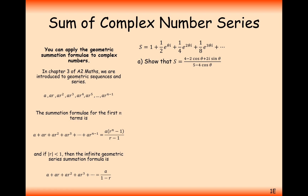The question is S equals 1 plus one-half e^(iθ) plus one-quarter e^(2iθ) plus one-eighth e^(3iθ) plus dot dot dot up to infinity. It's slightly different from the last video which stopped at a certain point — this one extends to infinity. We recognize this is an infinite geometric summation. The value of a, the starting value, is 1. The r value, the common ratio between terms, is one-half e^(iθ).